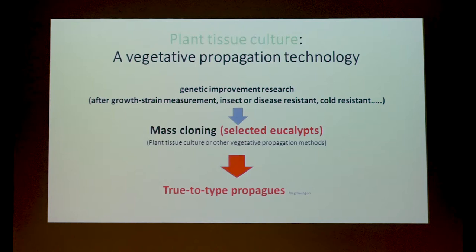I think we can't overemphasize enough the relationship between genetic improvement research and vegetative plant propagation. Many of the talks before me were all about breeding plants, looking for attributes like frost resistance, better wood quality, better durability. From a genetic research program we're going to have only a few individuals with desirable attributes. A few individuals with desirable traits cannot make an industry.